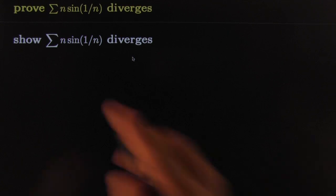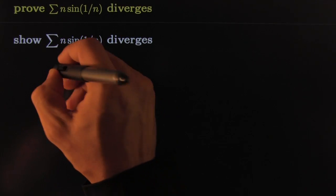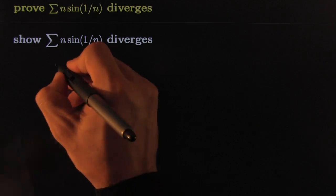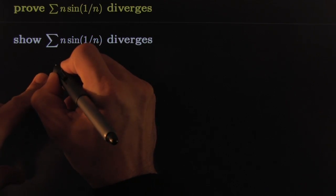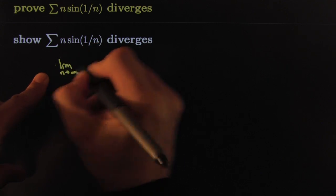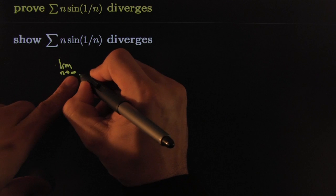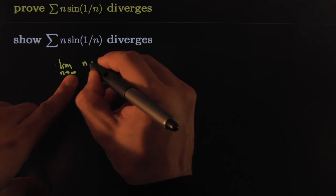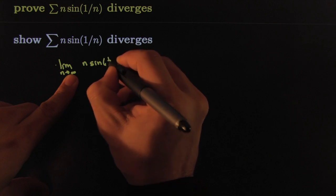All right, so let's see if this converges or diverges according to the divergence test. All we have to do is check this limit: the limit as n goes towards infinity—sometimes I don't even write 'n goes towards infinity' because for our series n always goes towards infinity—of n times sine of one over n.